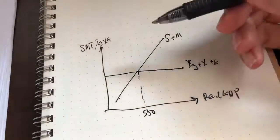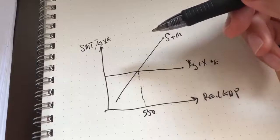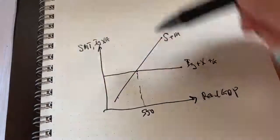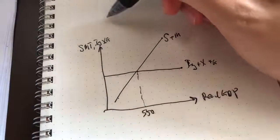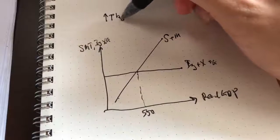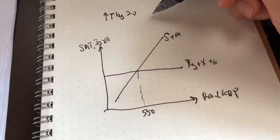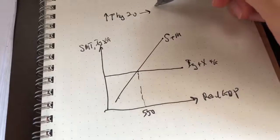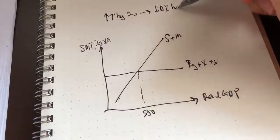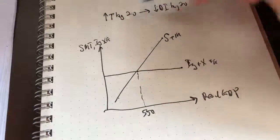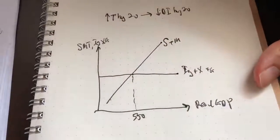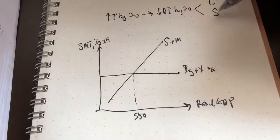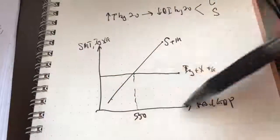Say we have taxation — when tax increases by $20 billion, it will affect disposable income, which will fall by 20. When there's a change in disposable income, it brings about two changes in both consumption and savings. In the leakage injection approach, you don't show consumption here — consumption is shown in the Keynesian cross. Here we show the change in savings as well as tax.